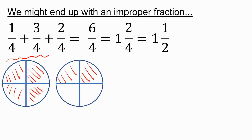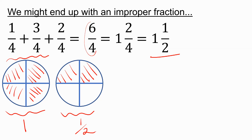And if I do this, I can see that I've got one whole circle and then half a circle. So the answer is one and a half. To calculate this, we can just say that six over four can be written as one and a half because four goes into six once with remainder two. So we write it as one and two over four. Two over four will then simplify to one over two.